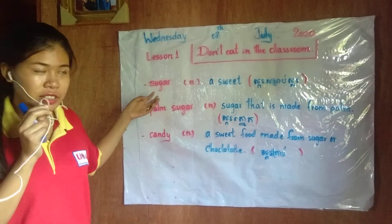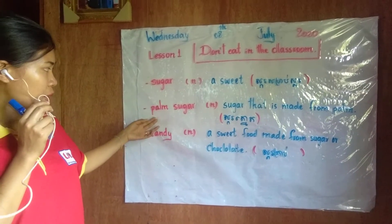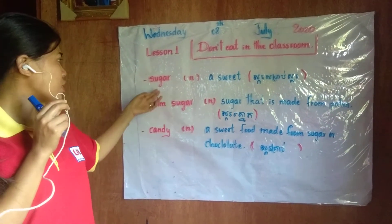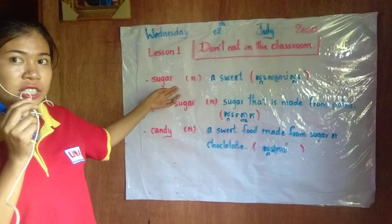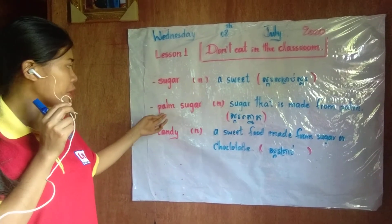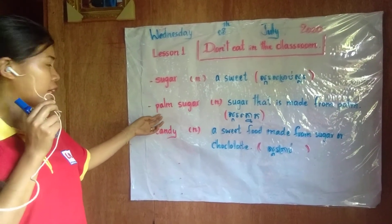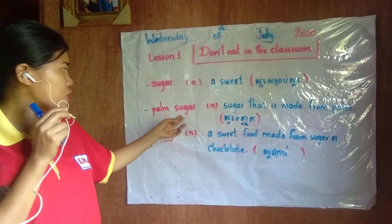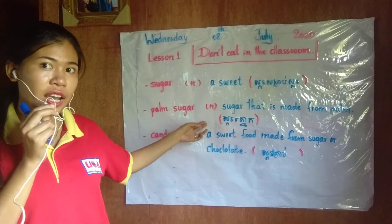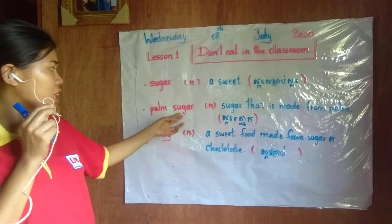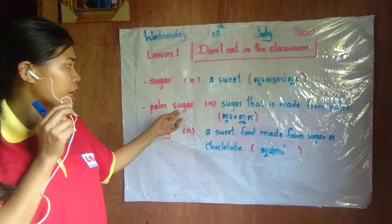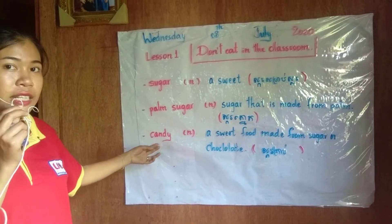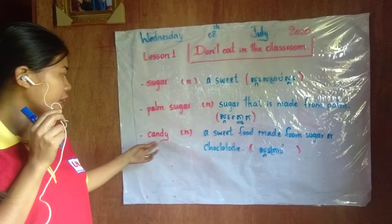Today we study three words: sugar, palm sugar, and candy. Sugar is spelled S-U-G-A-R. Palm sugar: let's spell 'palm' first — P-A-L-M, then 'sugar' — S-U-G-A-R, so palm sugar is P-A-L-M S-U-G-A-R. Candy is spelled C-A-N-D-Y.